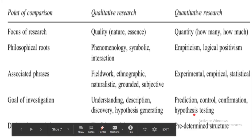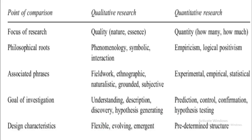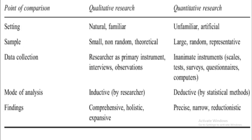Regarding design characteristics, qualitative is flexible, evolving, and emergent. Quantitative research has predetermined structure. For setting, qualitative research is conducted in a natural and familiar setting. Quantitative is often unfamiliar and sometimes artificial. For sample size, qualitative uses small, non-random, and theoretical sampling — you stop collecting data when satisfied with the respondents. Quantitative uses large, random, and representative sampling.